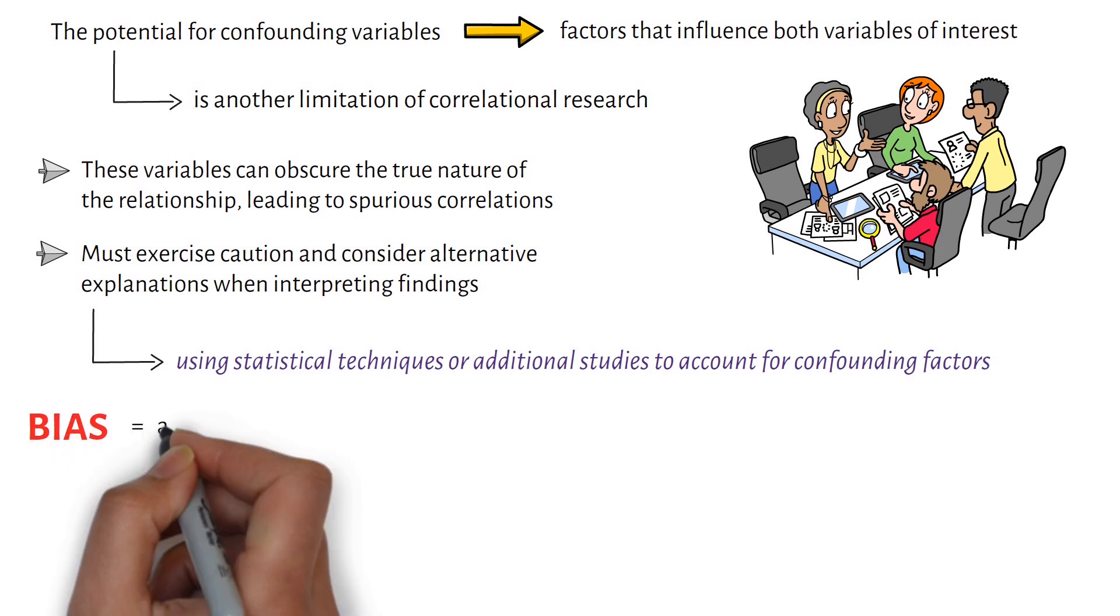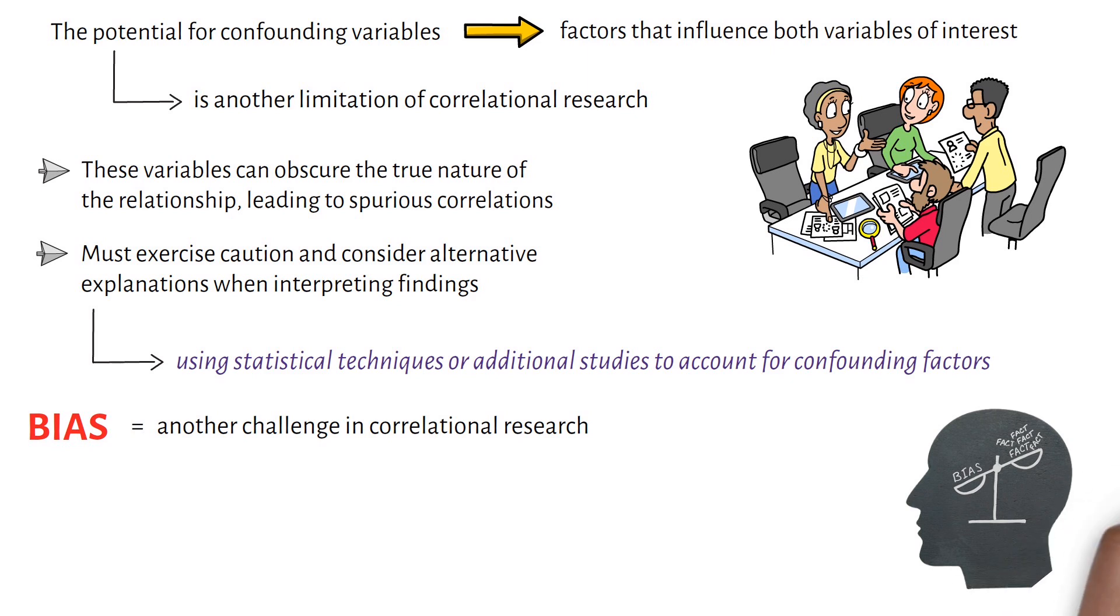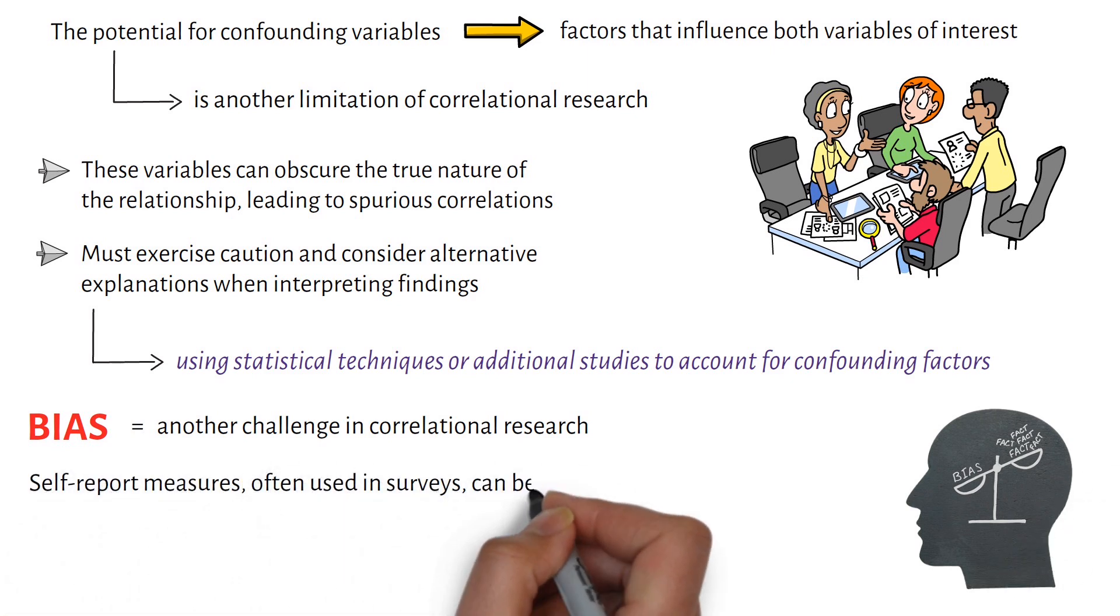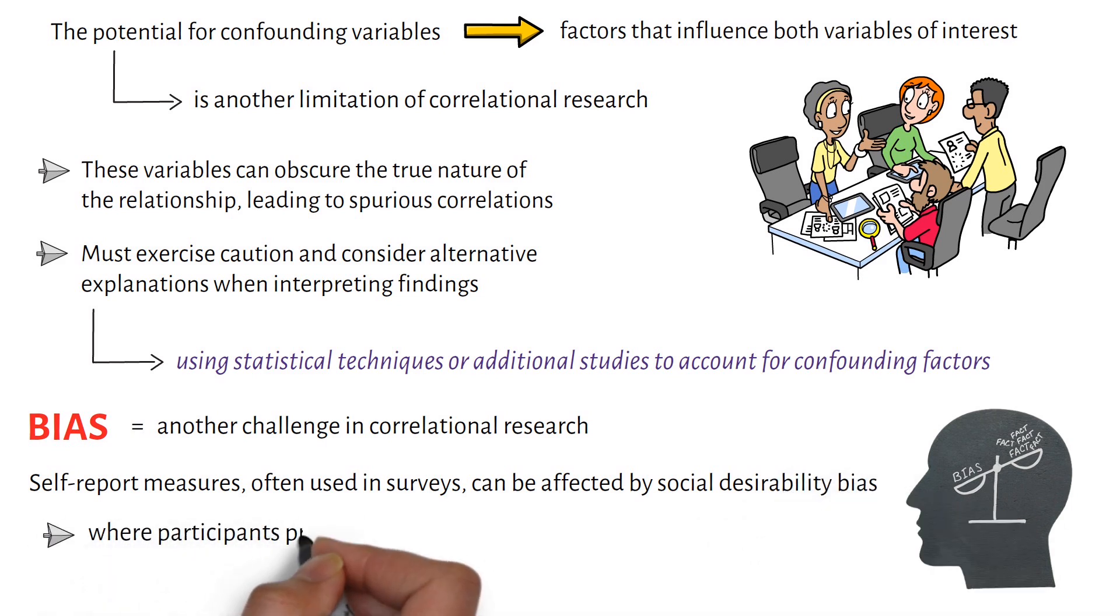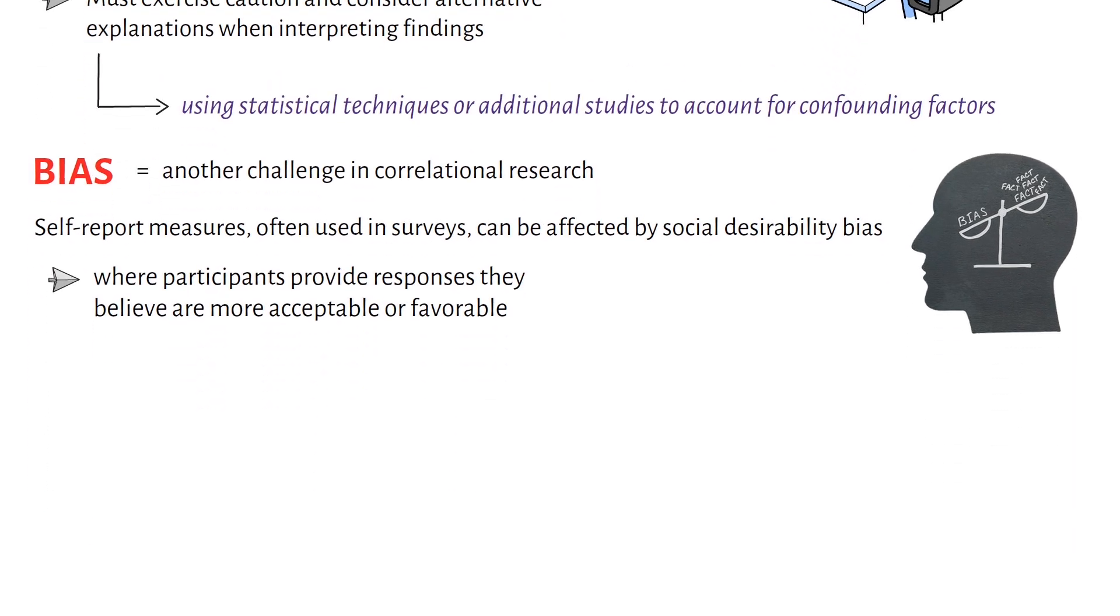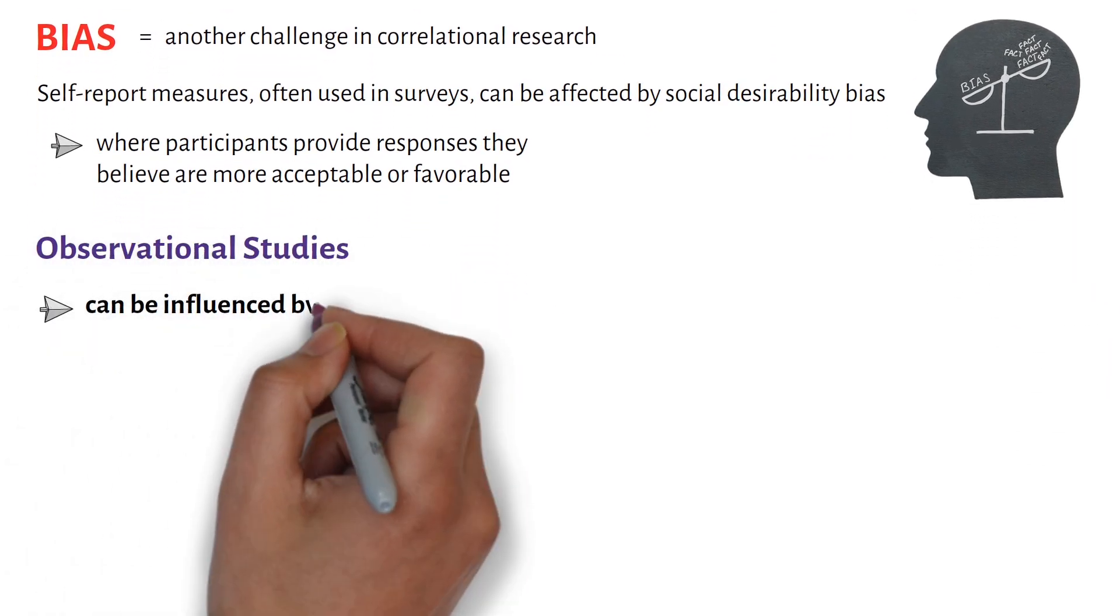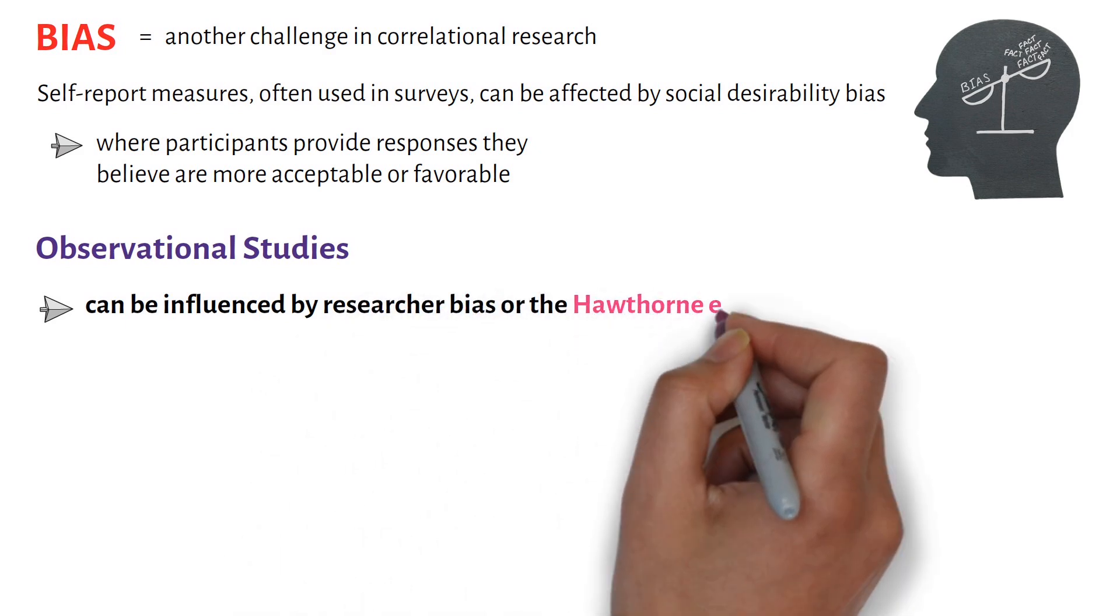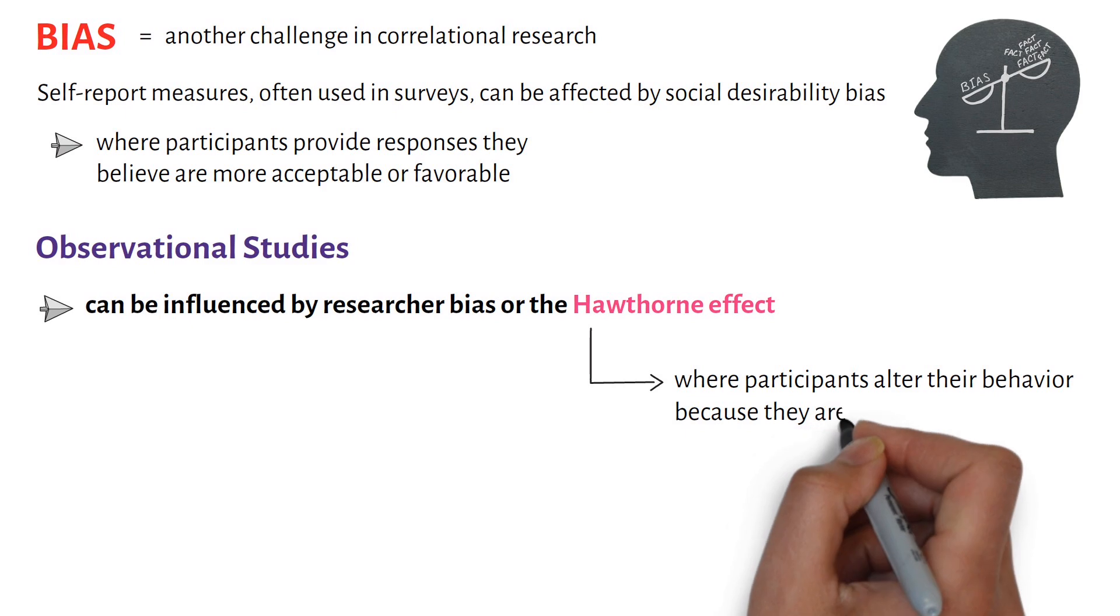Bias is another challenge in correlational research. Self-report measures, often used in surveys, can be affected by social desirability bias, where participants provide responses they believe are more acceptable or favorable. Similarly, observational studies can be influenced by researcher bias or the Hawthorne effect, where participants alter their behavior because they are aware of being observed.